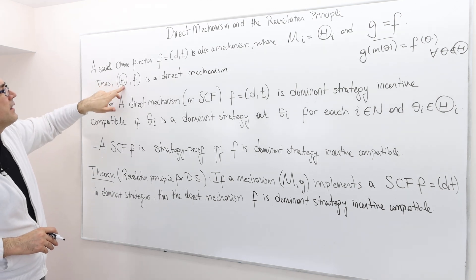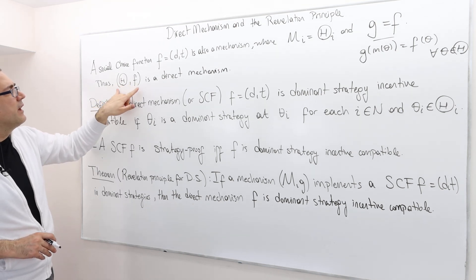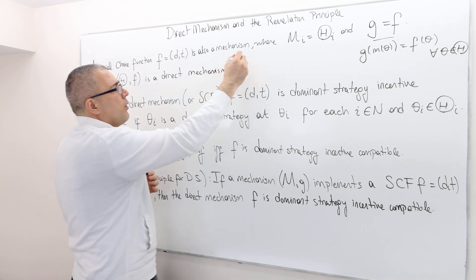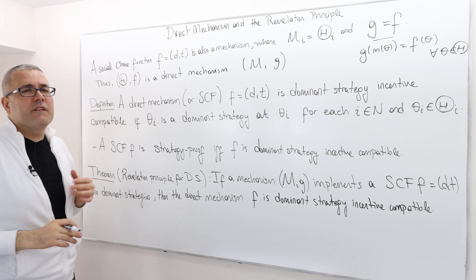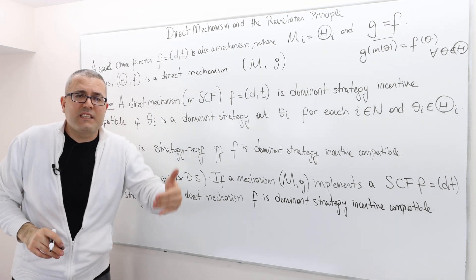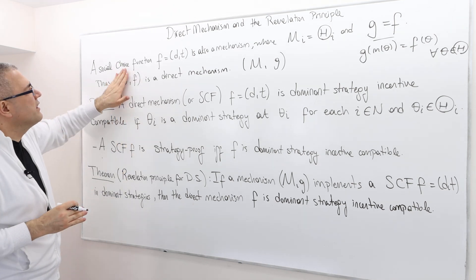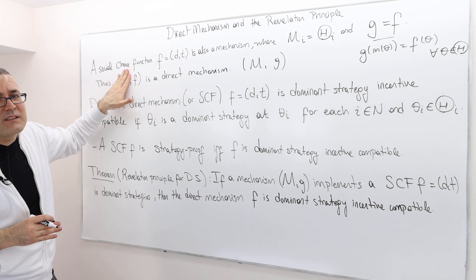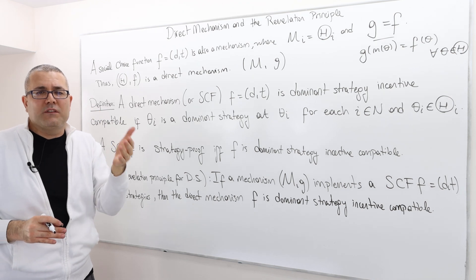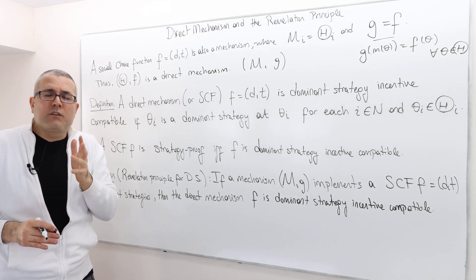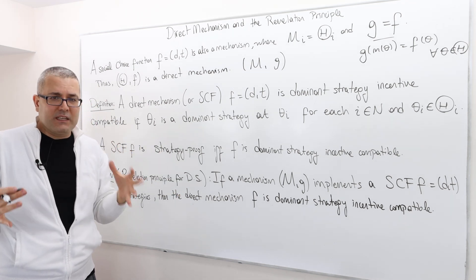So the type space — the type profile capital Θ — and F is going to be a direct mechanism, which corresponds to the mechanism (M, G). Whenever we say direct mechanism, we understand that the strategy space is nothing but the type space itself. So we don't really talk about capital Θ separately. We just say direct mechanism F, because that is the important part — the outcome function — since whenever we say direct mechanism, we are already clear about what the message space is.